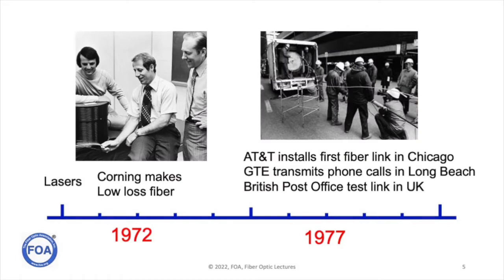Dr. Cowell's work was all theoretical, and he left it up to others to figure out how to make it work. In 1972, Corning announced they had made fibers that were low enough loss to actually be useful for telecommunications. Donald Keck, Peter Schultz, and Robert Maurer developed a new way of making glass optical fiber — not by melting sand, but by building a preform from gaseous components so pure that the optical fiber loss was low enough for telecommunications.